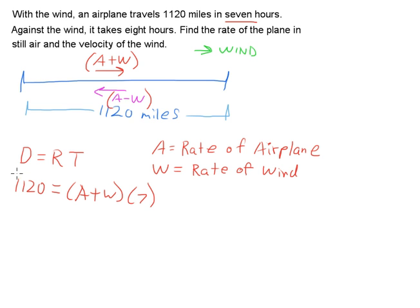And then the next one going back. 1120 against the wind. The rate against the wind is the airplane's rate minus the wind speed because it's fighting that wind speed. But it takes eight hours that time.